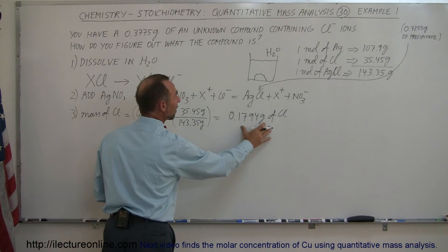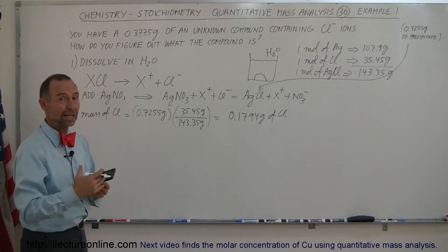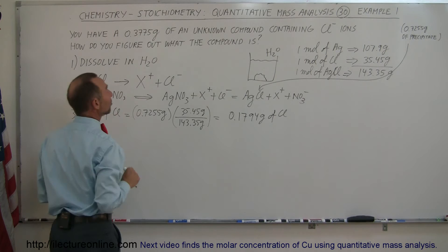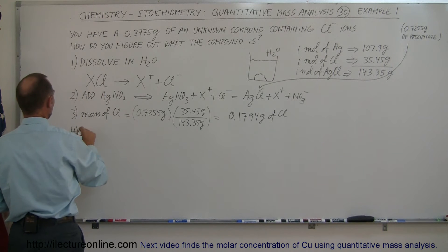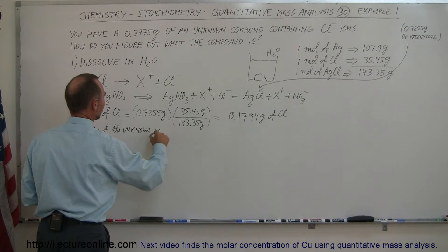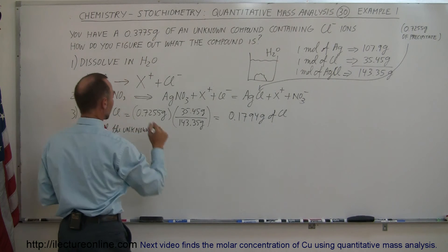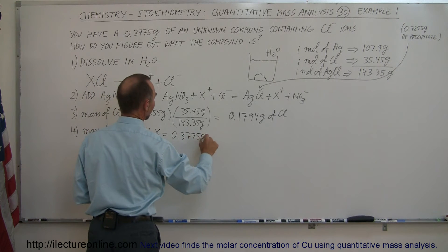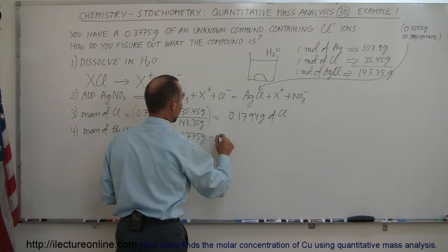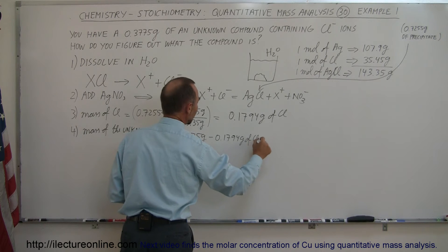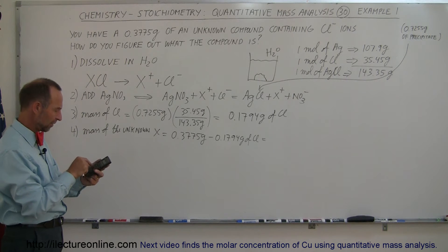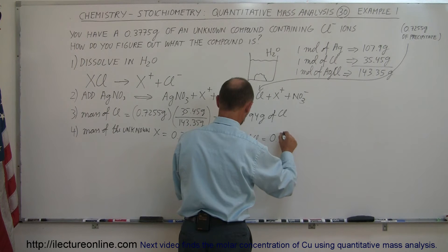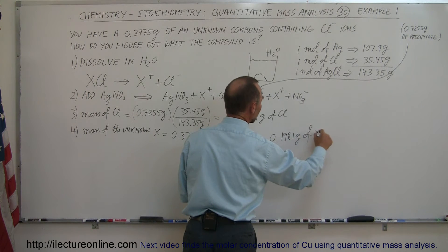So if this is how much chlorine we have in the precipitate, we can assume that if we did a good job precipitating out all the chlorine, we had this much chlorine in the original sample — which means the remainder is the mass of the unknown element. Step four: the mass of unknown X equals the mass of the sample minus the mass of the chlorine. So 0.3775 grams minus 0.1794 grams gives us 0.1981 grams of the unknown element X.